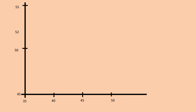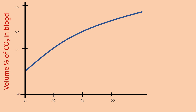Now let's see this graphically. This graph shows a portion of the carbon dioxide dissociation curve. Along the y-axis is the volume percentage of carbon dioxide in the blood, and along the x-axis is the partial pressure of carbon dioxide in millimeters of mercury. The partial pressure of carbon dioxide inside the body typically exists between 40 to 45 mmHg. This curve depends on the partial pressure of oxygen.